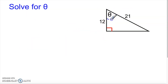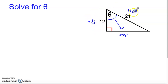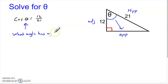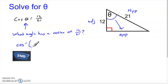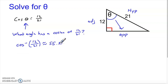Let's look at another triangle. This time theta is up here — across from it we don't know the opposite side, but this is still the hypotenuse and this is the adjacent. Adjacent and hypotenuse means cosine: the cosine of theta equals 12 over 21 — true, but not helpful. I need to know what theta is, so I ask the calculator: what angle has a cosine of 12 over 21? I hit second, then cosine, and type in inverse cosine of 12 over 21. Theta is about 55.150 degrees.